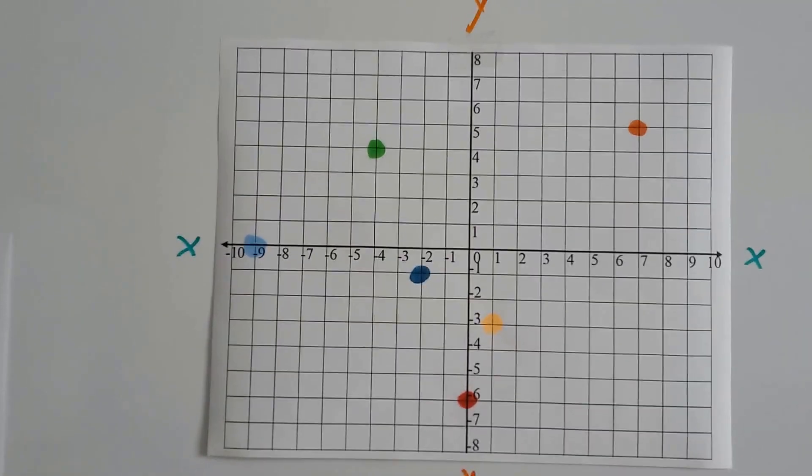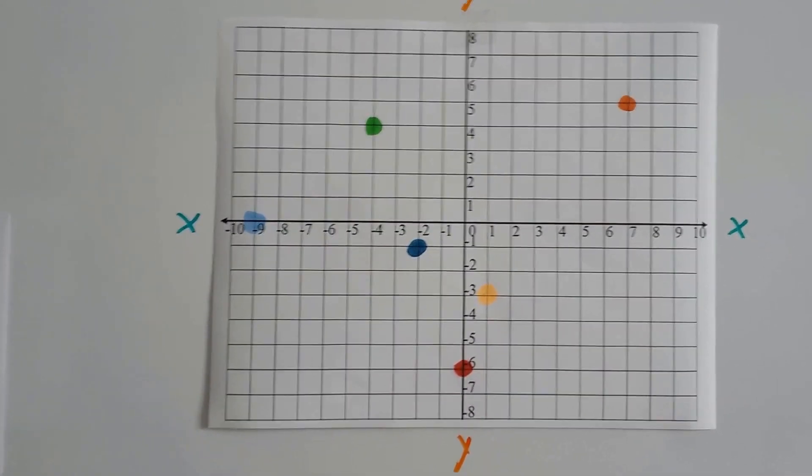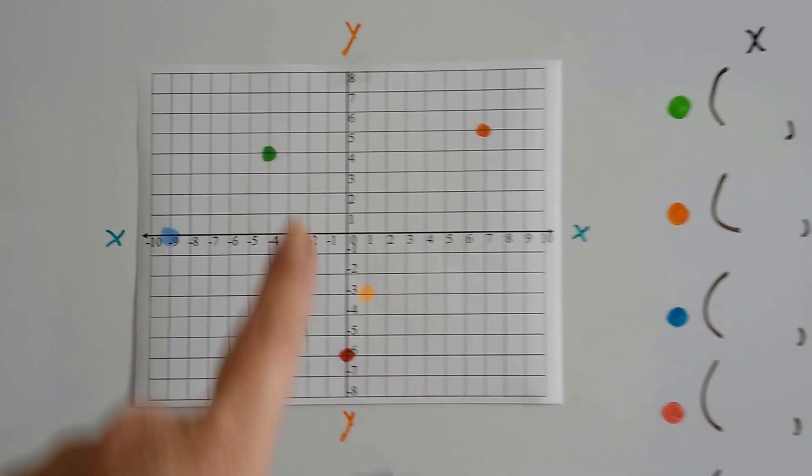These are already plotted, but we need to write the ordered pairs, the x and y values.